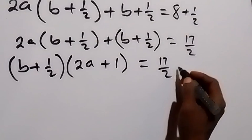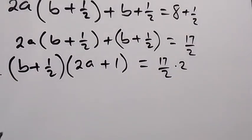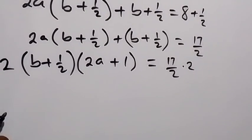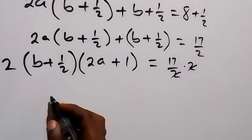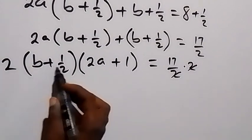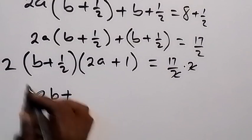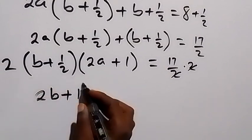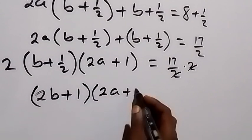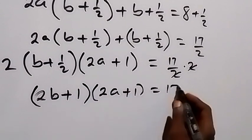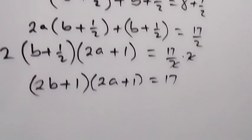Now we can multiply both sides of this equation by 2 in order to eliminate the fraction. Multiply this side by 2 and also multiply this side by 2 — the 2 cancels with the denominator — and using this 2 to open the bracket gives us 2b plus 2 times half, that's 1. So we get (2b + 1) into bracket (2a + 1) equals 17.